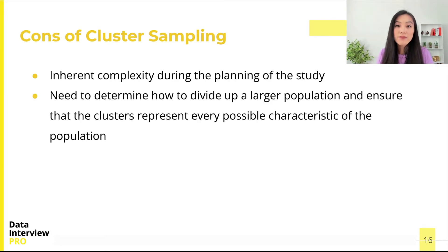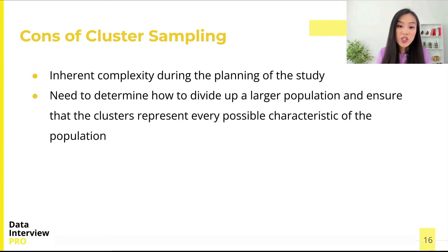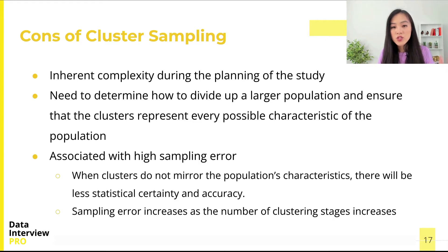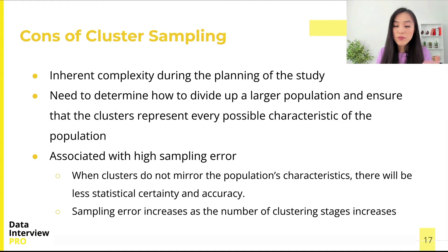Cluster sampling also has some drawbacks. Firstly, there is an inherent complexity to cluster sampling, which comes in through the planning of the study. This method often requires more attention because we need to determine how to divide up a larger population efficiently and properly, and ensure that the clusters represent every possible characteristic of the population. Also, cluster sampling is associated with a high sampling error. When the clusters do not mirror the population's characteristics or serve as a mini representation of the population as a whole, there will be less statistical certainty and accuracy. Sampling error also increases as the number of clustering stages increases.